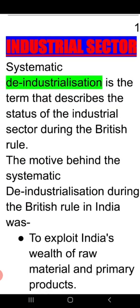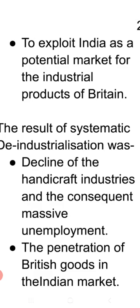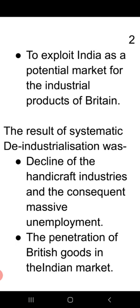The key term describing the industrial sector during British rule was 'systematic de-industrialization.' The British systematically worked to vanish and finish India's industrialization. They did this to exploit India's wealth of raw materials and primary products, and also to exploit India as a potential market for the industrial products of Britain.